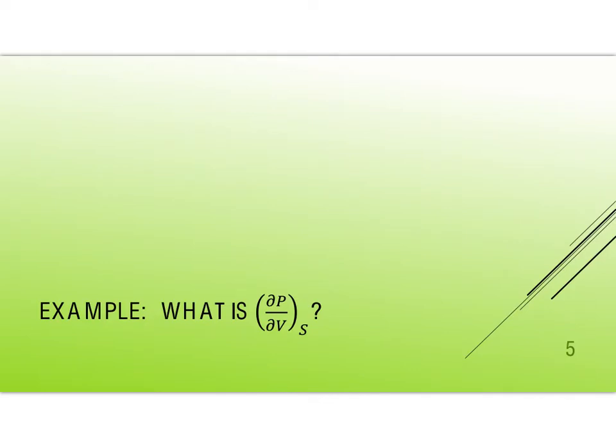So let's look at another one. This is how P changes with volume for an isentropic process. So our first step is going to be to look at this as a Jacobian. So we'll rewrite it in Jacobian notation.